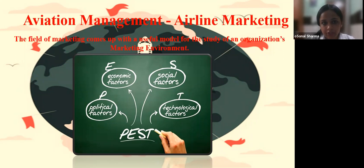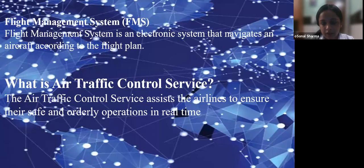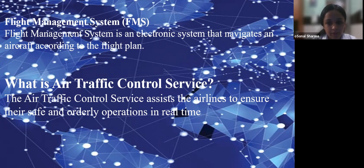A flight management system is an electronic system that navigates an aircraft according to the flight plan. Flight plans are prepared by pilots or other professional dispatchers before departure and are entered into the flight management system. The flight management system also contains a navigation database that holds all relevant information required to execute the flight plan.